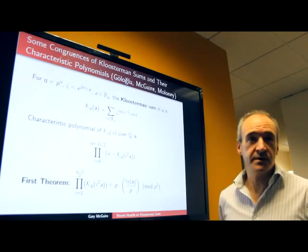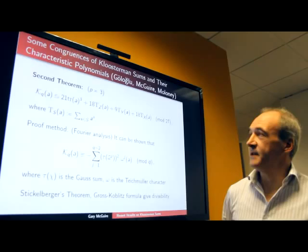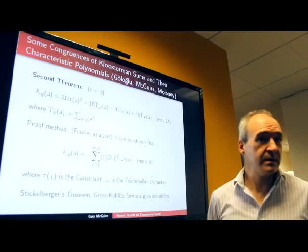Our first theorem concerns the constant term modulo p squared, and we have a nice expression for the constant term modulo p squared, here it is. All the coefficients were shown modulo p by Moiseo to be 0 modulo p.